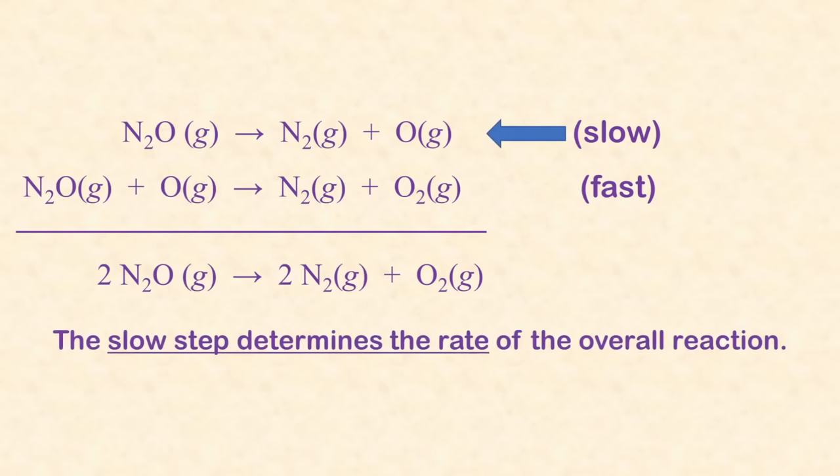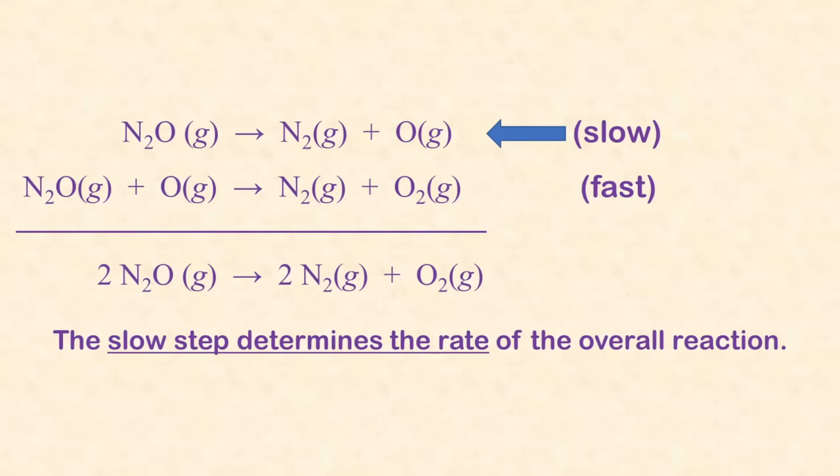Most reactions take place in multiple steps, forming a reaction mechanism. One step is slower than the others, and that slow step determines the rate of the whole reaction. If we can determine the rate law of the slow step, we'll know the rate law for the whole reaction.